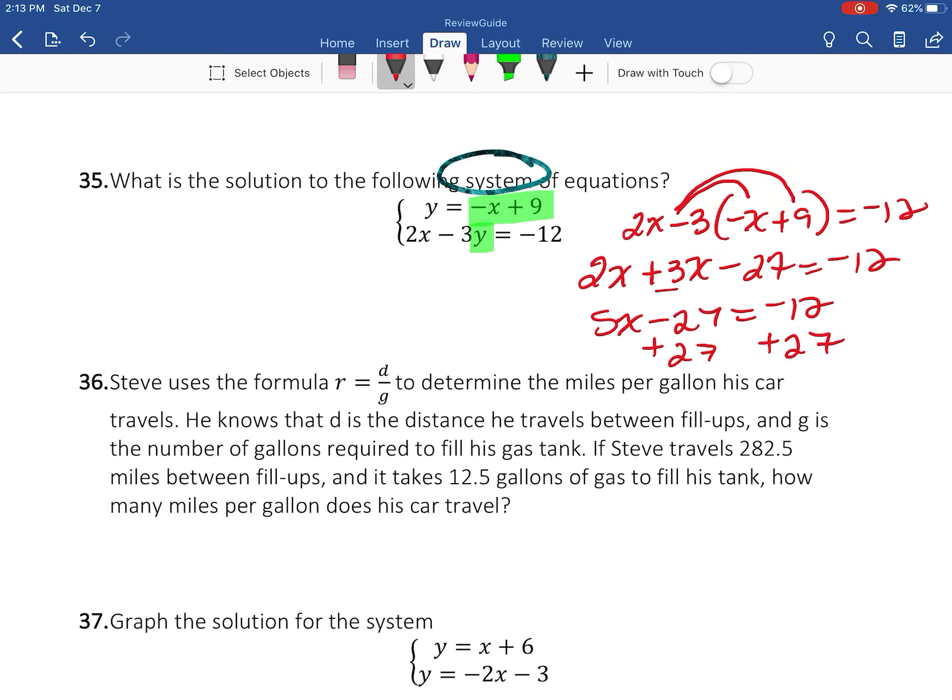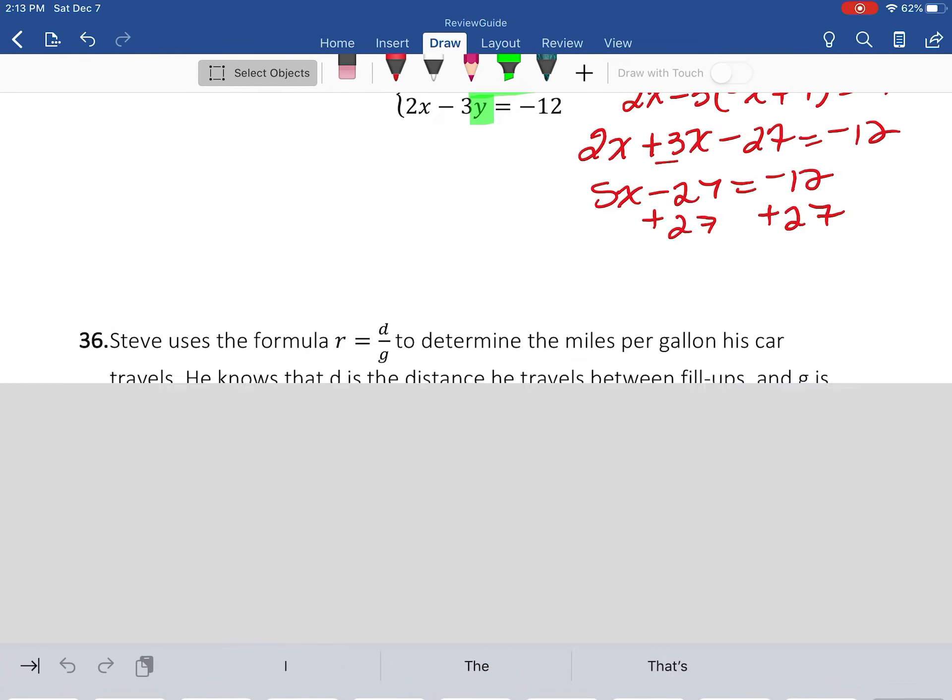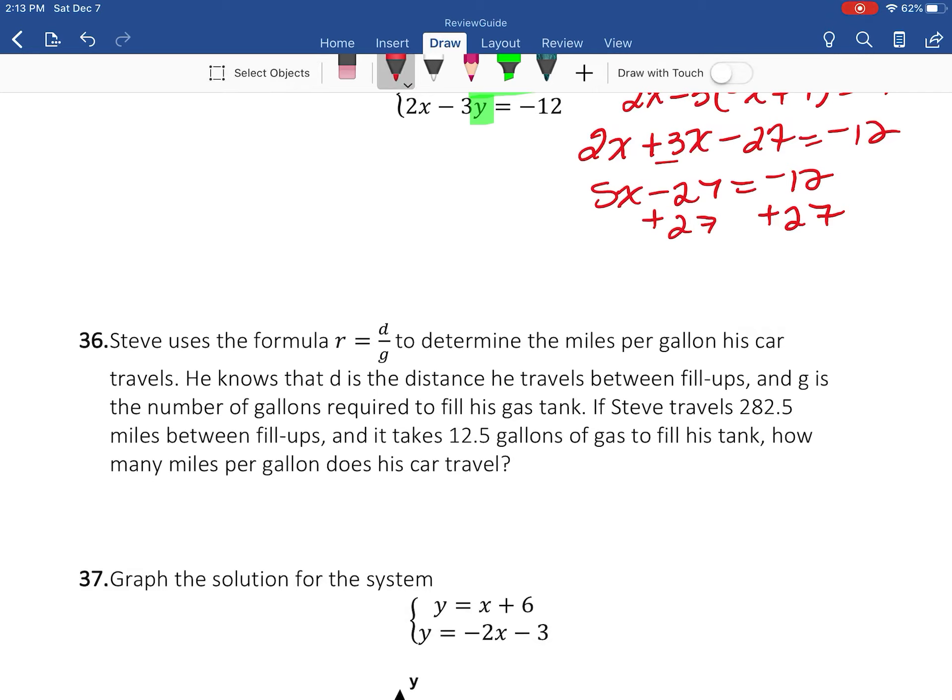Add 27, add 27. Let me give myself more room here. So 27 minus 12 gives me 15. So 5x = 15. So x is going to be equal to 3.